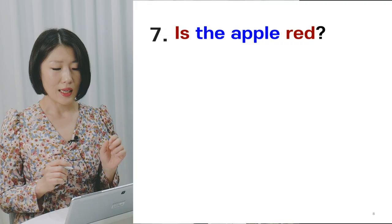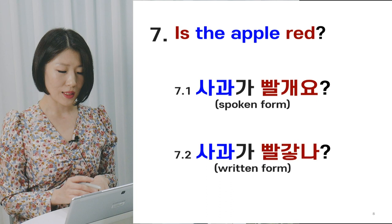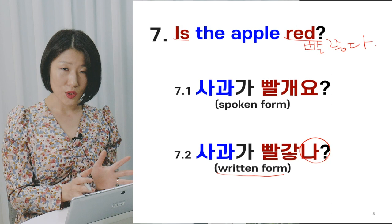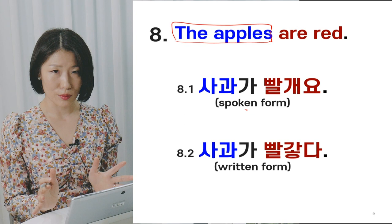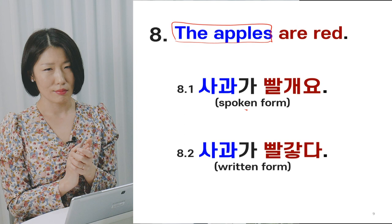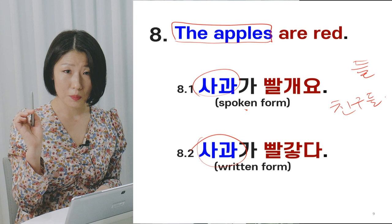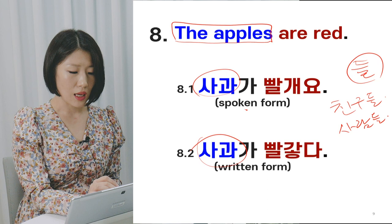Sentence 7: 'Is the apple red?' Spoken: 사과가 빨개요? Written: 사과가 빨갛나? In written form, 나 is the special ending for questions. Sentence 8: 'The apples are red' — 사과가 빨개요 / 사과가 빨갛다. Apple and apples in English are different, but in Korean there is no difference. We do have the suffix 들 to indicate plural nouns — like 친구들 (friends) or 사람들 (people) — but it is very awkward to use 들 for objects other than people. Saying 사과들 sounds very awkward.